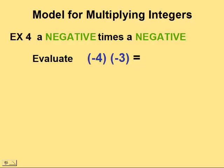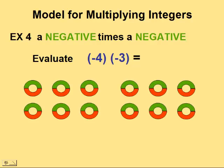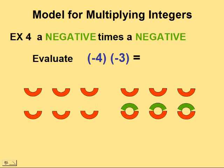In our final example, we'll multiply a negative times a negative: negative four times negative three. This means we need to take away four groups of three negatives. Four times three is 12, so we'll start with 12 zeros. Now we'll take away four groups of negative threes — one, two, three, and four groups of negative threes are all gone, leaving us with positive 12. Negative four times negative three is positive 12.